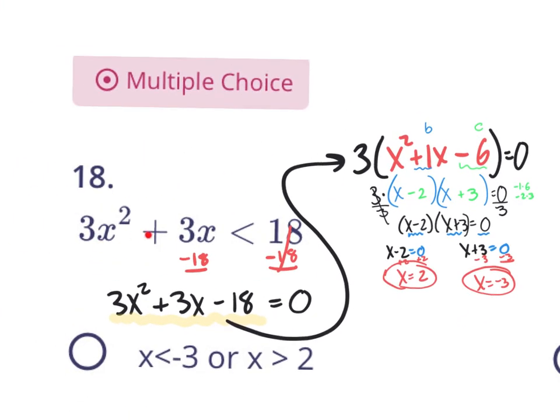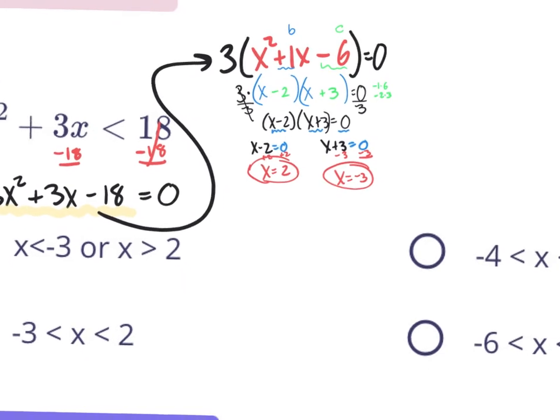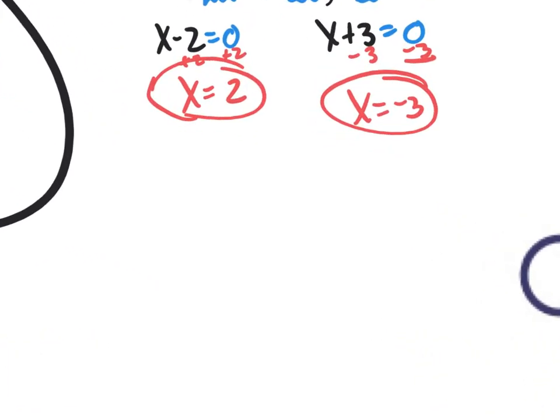So if it were an equation, those would be our two answers and that would be it. However, this is not an equation — it's an inequality. So that was step one of solving a quadratic inequality: pretend it's an equation and get your answers. If it's not factorable, use the quadratic formula — you should get the same two answers, x equals 2 and x equals negative 3. But there are two more steps. The next step is to plot your answers on a number line and test values.